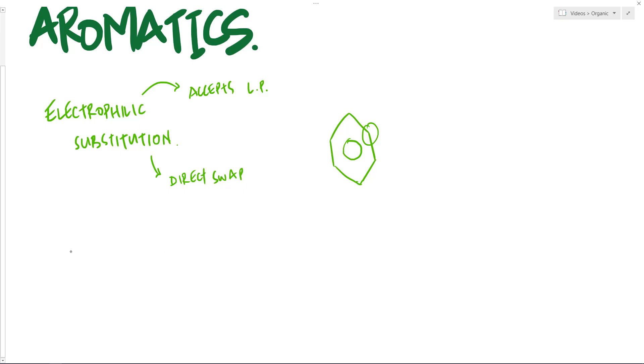Now the reagents that are used to make, this is the nitration one, the reagents that are used in this case are concentrated nitric acid. Let me know as well what you think of this new system, my new, what do you call it, like canvas type thing, drawing software stuff.